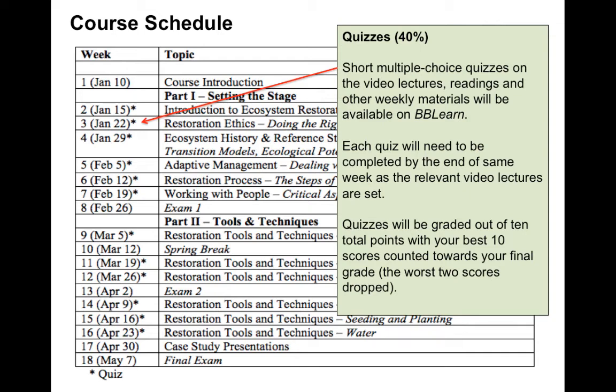You will also see on the schedule that there are several different types of assessment tools we will use to determine your understanding and comprehension of the material. Over the semester, we will have 12 short weekly quizzes that will review the material presented in the video lectures, short readings, and other materials such as YouTube videos posted on each topic within the BB Learn website. Each quiz will be 10 points total, and I will only count the 10 highest-scored quizzes, which will constitute 40% of your final grade, dropping the two lowest quiz scores. So it's important to watch and read the material provided on BB Learn each week and to stay on top of the material.